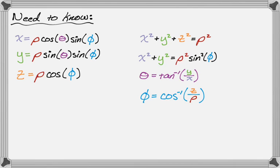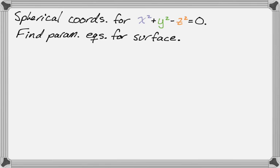And then phi is the inverse cosine of z over rho. It's much less dangerous because of the range of arc cosine. So let's do a problem. So we want to find spherical coordinates for x squared plus y squared minus z squared equals zero. Then we want to write parametric equations for the surface. So we're going to parameterize the surface.